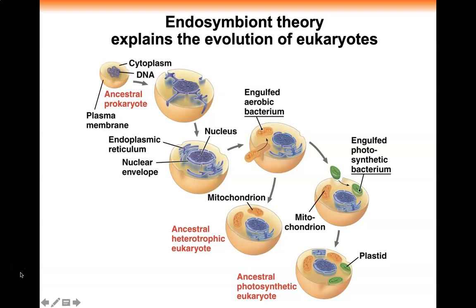Alright, Bio 2 folks, we are on chapter 28 on protists. Protists are eukaryotes — we finished prokaryotes and now we're moving on to eukaryotes. Protists are the earliest eukaryotes that arose.